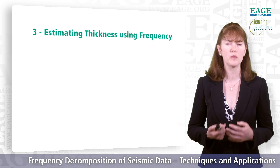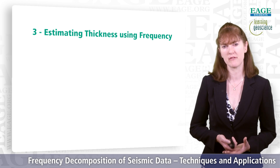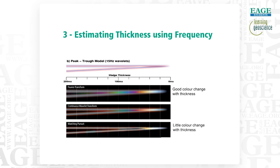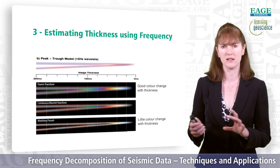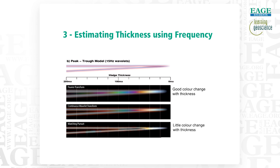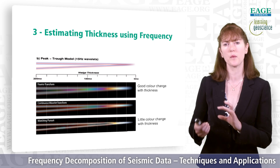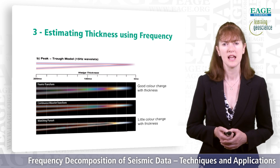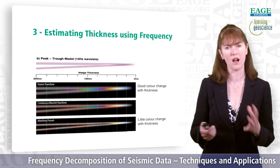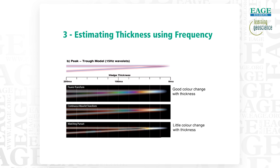The third example shows how we can use frequency to estimate thickness, where a technique like a Fourier transform really helps because you get very good frequency resolution. Looking at a simple wedge model, we can see the difference in the RGB blend of the Fourier transform, the continuous wavelet transform, and the matching pursuit. With the Fourier transform, we get a nice rainbow of colors on the different thicknesses of the wedge, due to the destructive and constructive interference between different frequencies. With the matching pursuit-based technique, you get very distinct top and base surfaces of the wedge, defined all the way up to the tuning point — giving good vertical resolution but making it unsuitable for estimating thickness, whereas the Fourier transform result gives a range of colors we can use for thickness estimation.